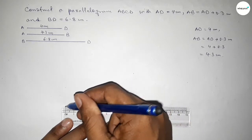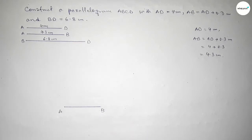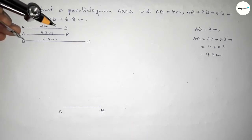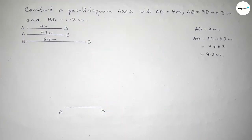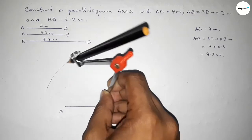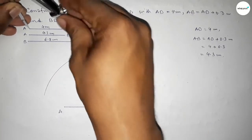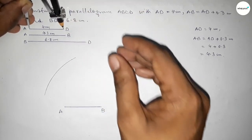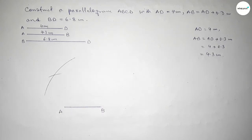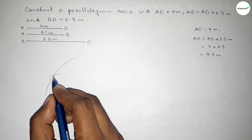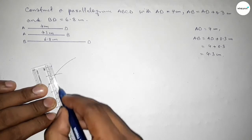Draw a line of length 4.3 cm, marking point A and point B. Now take the length 6.8 cm using the compass and place it on point B, drawing an arc. Then take the length 4 cm using the compass, place it on point A, and cut an arc so both arcs intersect at a point.